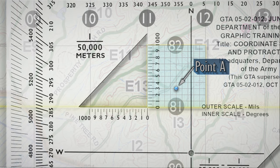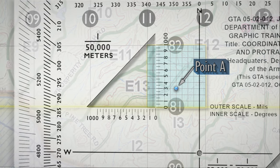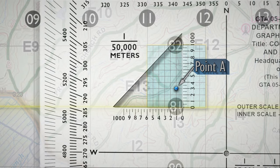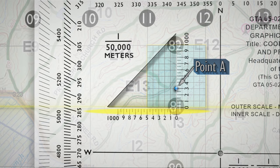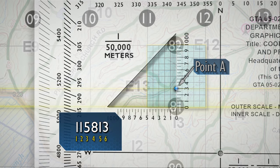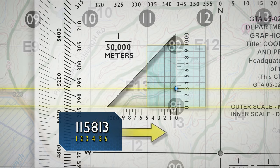Slide the scale to the right, keeping the bottom of the scale on the bottom grid line until point alpha is under the vertical or right-hand scale. To determine the six-digit coordinate, look at the hundred-meter mark on the bottom scale which is nearest the vertical grid line. This mark is the third digit of the number 115. The hundred-meter mark on the vertical scale nearest to point alpha gives you the sixth digit of the number 813. The complete grid coordinate is 115,813. Always read right and then up.